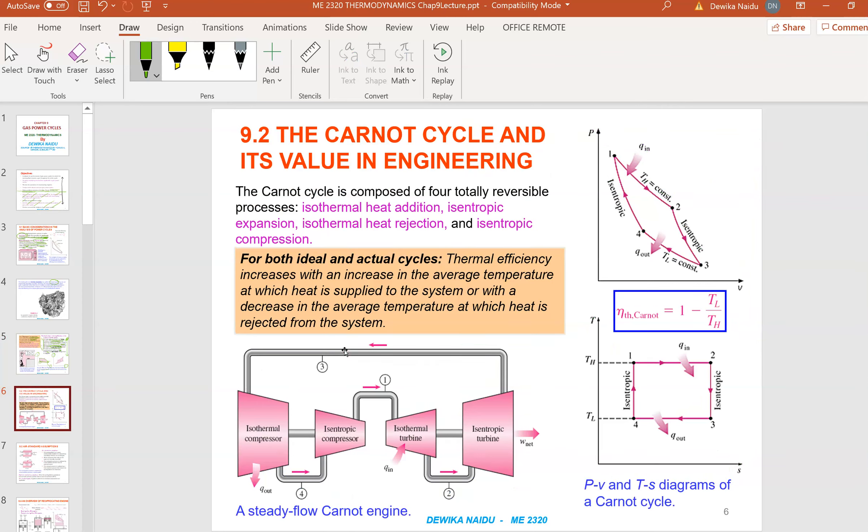The Carnot cycle and its value in engineering. The Carnot cycle is composed of four totally reversible processes. What does it mean by reversible? It is a perfect process. No irreversibility is happening in the process. Isothermal means temperature is constant, but heat is adding. And then we have isentropic. Entropy is constant and then we have isothermal heat rejection and isentropic compression.